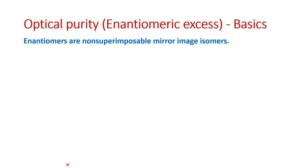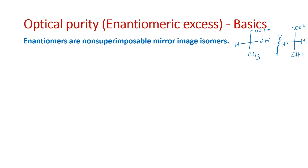What is optical purity or what is enantiomeric excess? In order to understand optical purity or enantiomeric excess, first we must know what enantiomers are. Enantiomers are nothing but non-superimposable mirror image isomers. I have put the Fischer notation and its mirror image. An enantiomer is a molecule whose mirror image is non-superimposable. When I rotate this molecule through 180 degrees and place on this, the groups do not match — that is why they are called enantiomers.